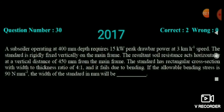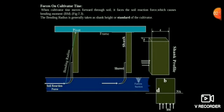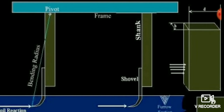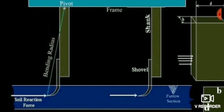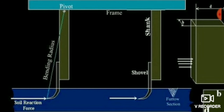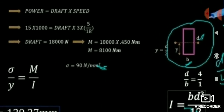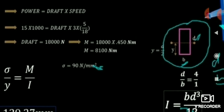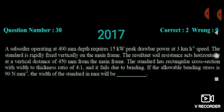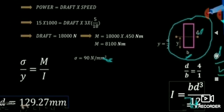The resultant soil reaction acts horizontally at a vertical distance of 450 mm from the main frame. Since the draft is 18,000 N and the distance is 450 mm, we can calculate the moment about the pivot. Moment M = draft × perpendicular distance = 18,000 × 0.45 = 8,100 Nm.